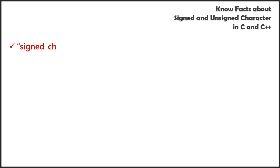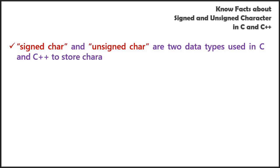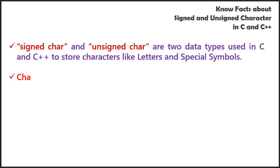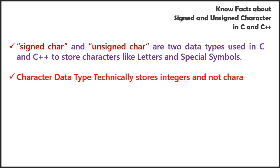Here are some facts about signed and unsigned characters in C and C++. Signed char and unsigned char are two data types used to store characters like letters and special symbols. One important fact is that the character data type technically stores integers and not characters, because character holds the ASCII value of the actual character.